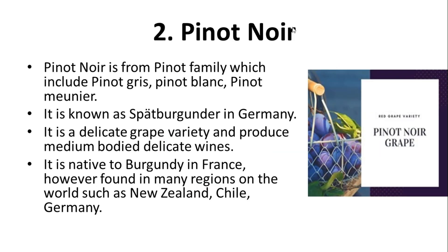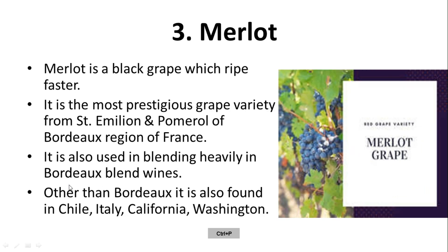Next is Pinot Noir, from the Pinot family which includes Pinot Gris, Pinot Blanc, and Pinot Meunier. The Pinot family is named because of the shape of the grape bunch. In Germany, Pinot Noir is known as Spätburgunder — an important name to remember. It is a delicate grape variety that produces medium-bodied, delicate wines. It is native to Burgundy, France, but is also found in New Zealand, Chile, and Germany.